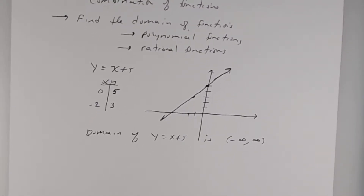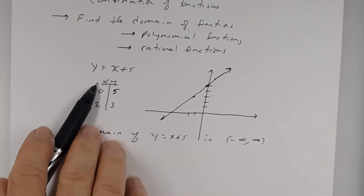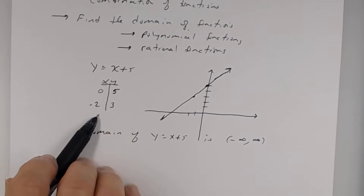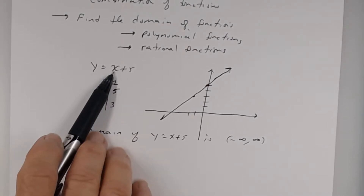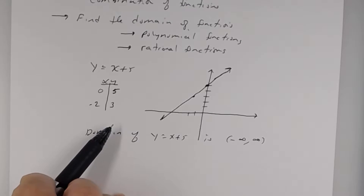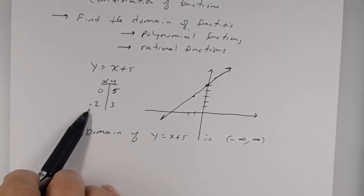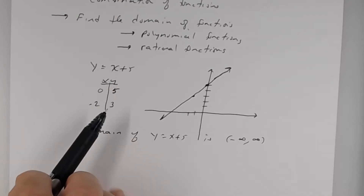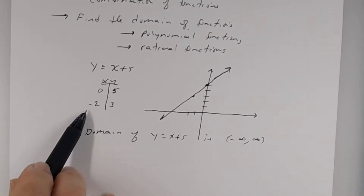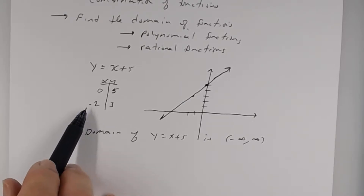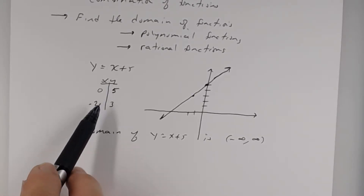The domain of this function is negative infinity to infinity because I can use any number for x and get a y value back. I can plug in a million — I'll get a million and five. I can plug in negative 2000.56 and still get a y value back.